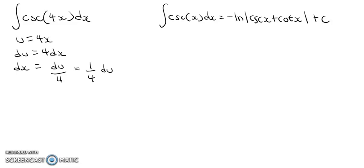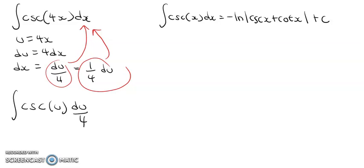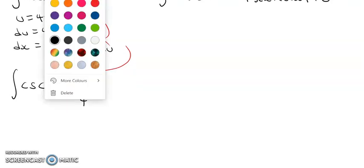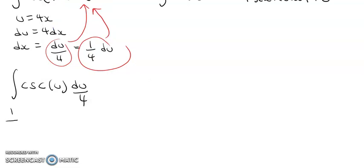And we're going to make that substitution and put that in for dx. So then we rewrite our integral as cosecant u and then du over 4. Then we can take out that 1 over 4 and move it to the front of the integral. So that will become 1 over 4 and then we're going to have the integral of cosecant u du.